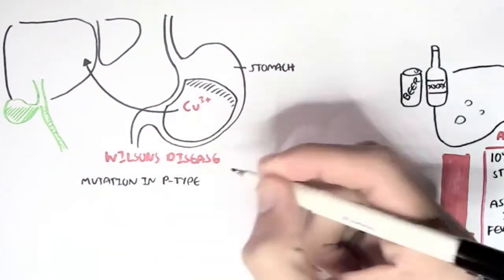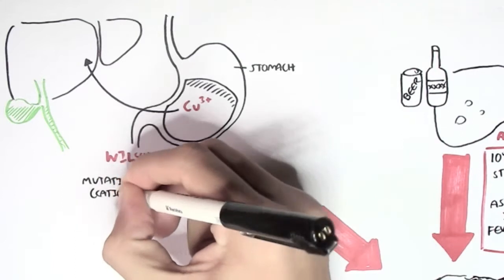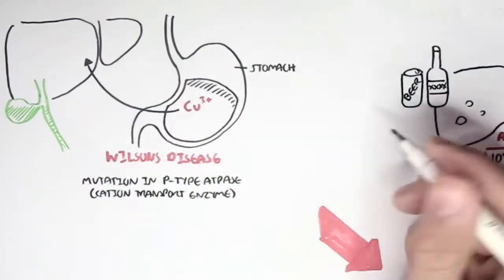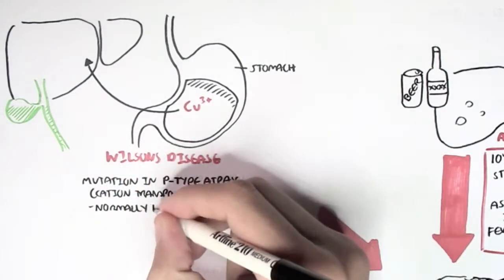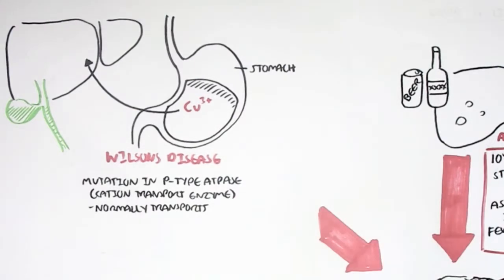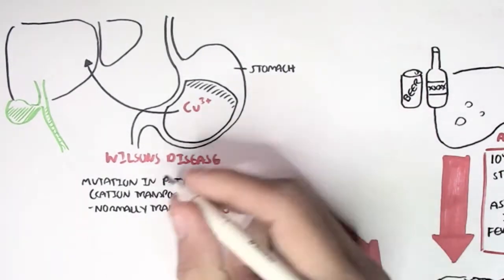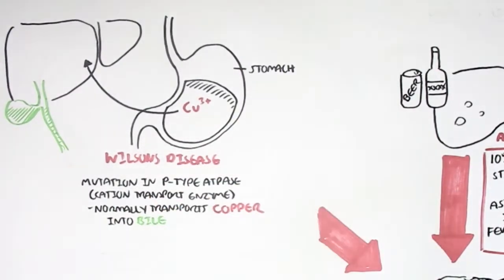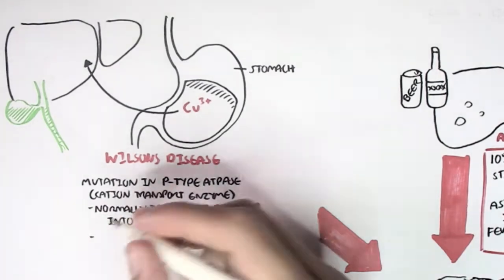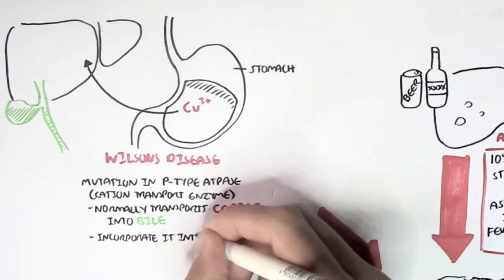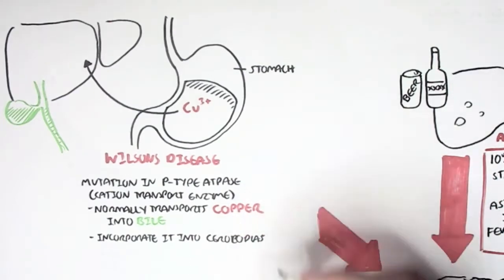However, in Wilson's disease we have a mutation of the P-type ATPase which normally transports the copper from the liver into bile to be incorporated into ceruloplasmin so it can leave the liver and circulate around the body or be eliminated.